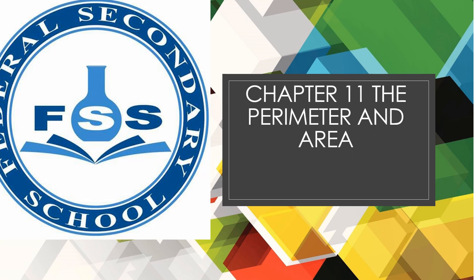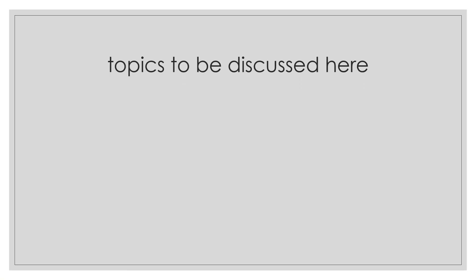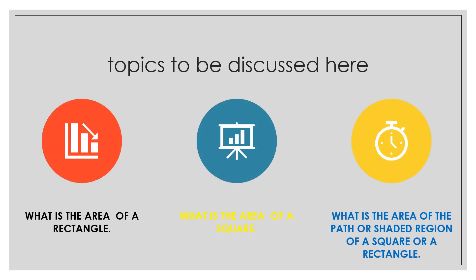Bismillahirrahmanirrahim, Assalamu Alaikum. Class 5, this is Chapter 11: The Perimeter and Area from your Geometry Syntax book. Topics to be discussed are: what is the area of a rectangle, what is the area of a square, and what is the area of the path or shaded region of a square or a rectangle.